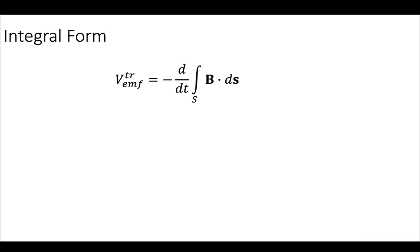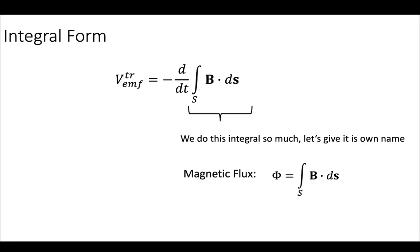So looking further at the integral form of Faraday's law, we have this equation. We're going to do the integral on the right side so much, we're going to give it its own name. We're going to call it the magnetic flux. That's the amount of the magnetic field that's passing through that surface that we're interested in.